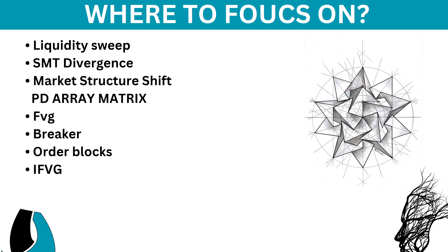So the simple things to focus on are: liquidity sweep, SMT divergence, and market structure shift. What we will be using from the PD array matrix are: the fair value gap, the breaker block, order blocks, and inversion fair value gap. I've made all these videos in the mentorship — you can buy it or get things from external sources.